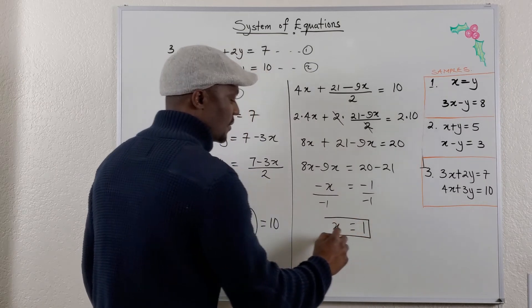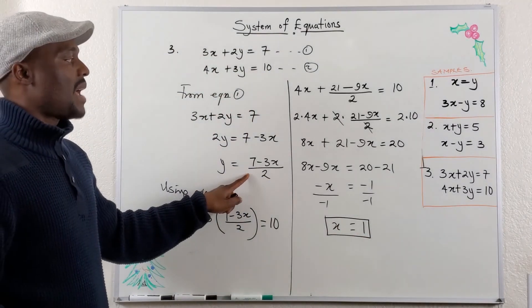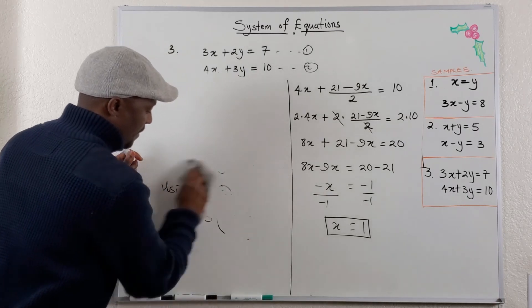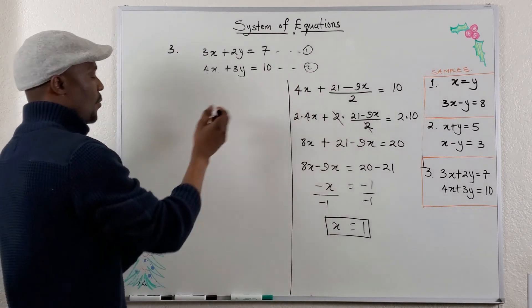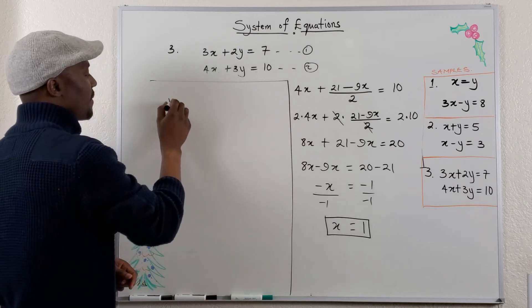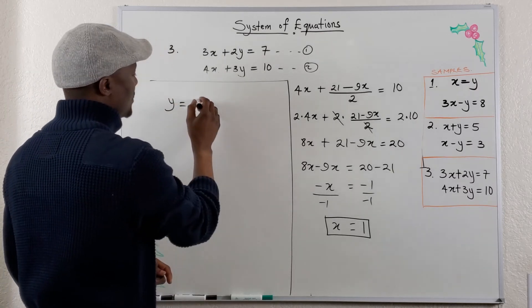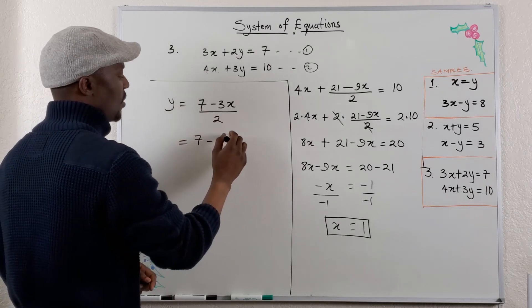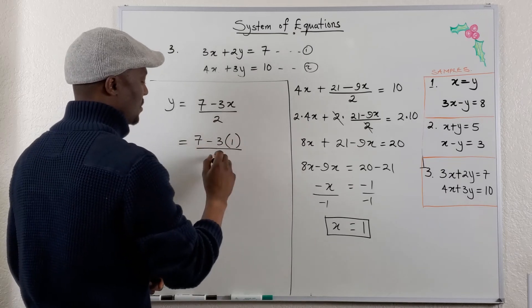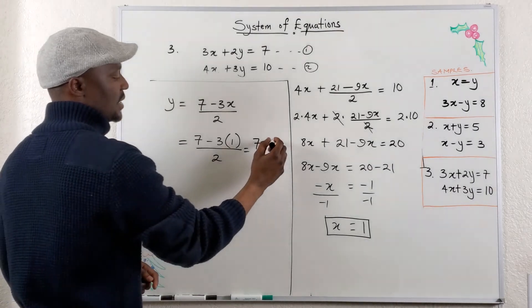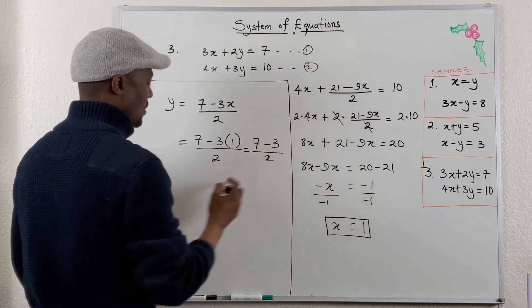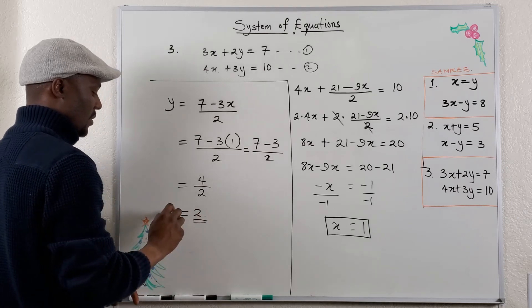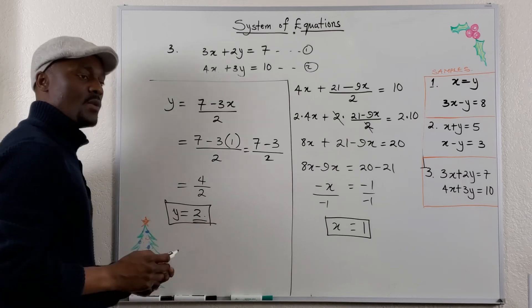Now that x equals 1, we can substitute back in. We know y equals (7 minus 3x) divided by 2, so we plug in: 7 minus 3 times 1, divided by 2. That's 7 minus 3 equals 4, divided by 2, which gives y equals 2. So x equals 1 and y equals 2 — that's your answer.